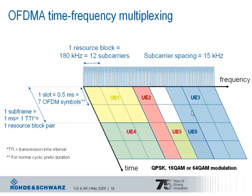This picture illustrates the OFDMA time-frequency multiplexing of several users. The available bandwidth is organized in resource blocks of 180 kHz each, which is 12 subcarriers. One UE can be assigned either one resource block — an example of this would be UE2 — or multiple resource blocks, like UE1 which has been assigned three resource blocks to transmit on.